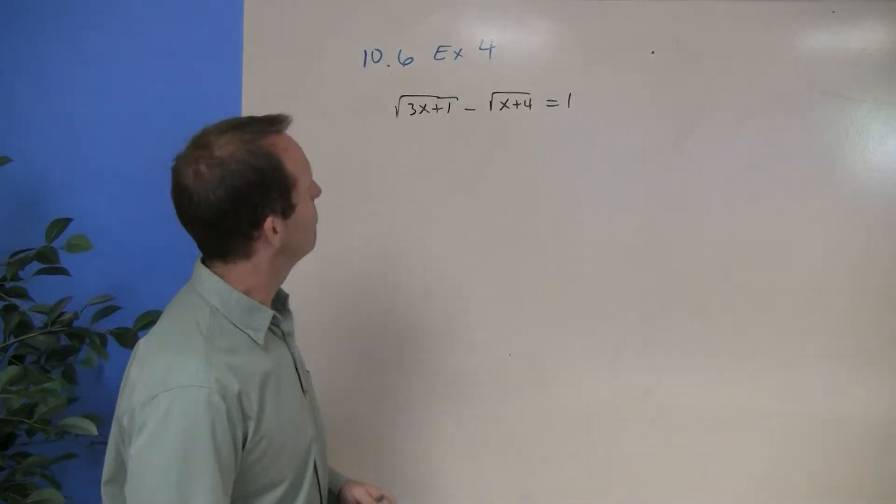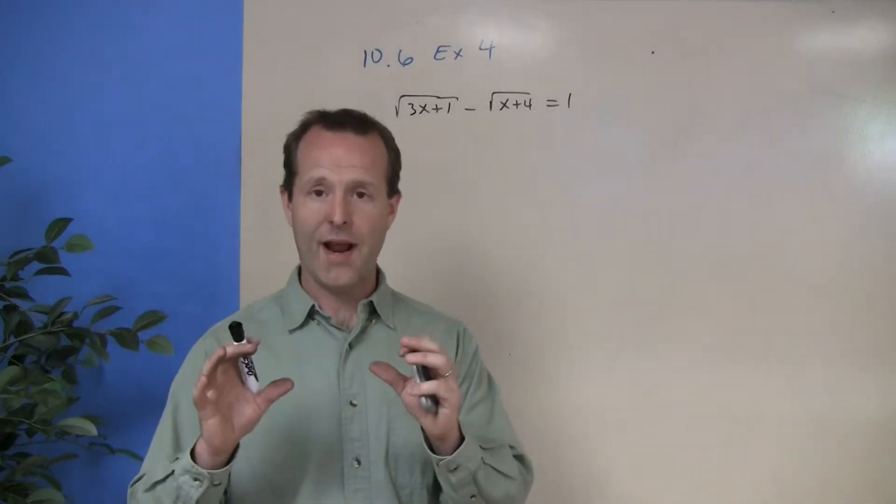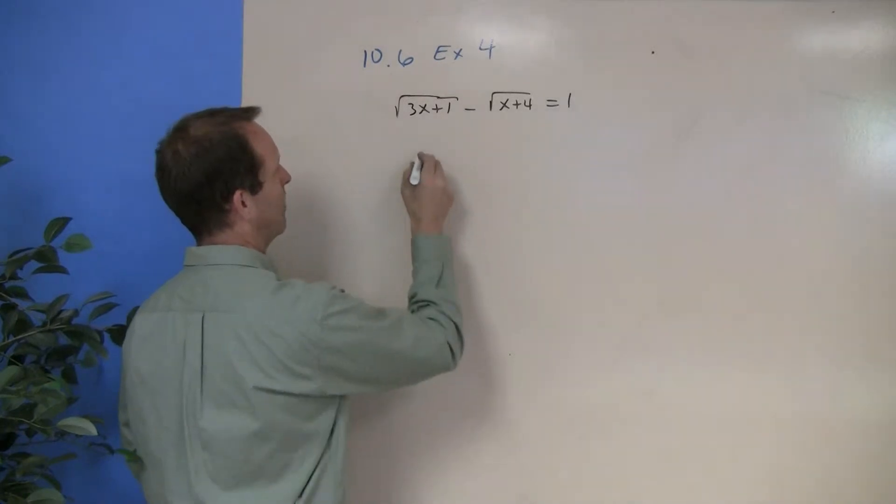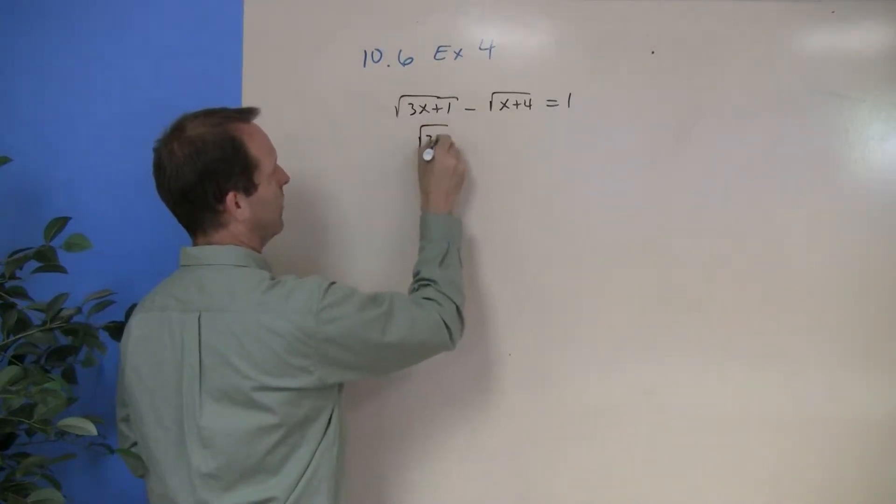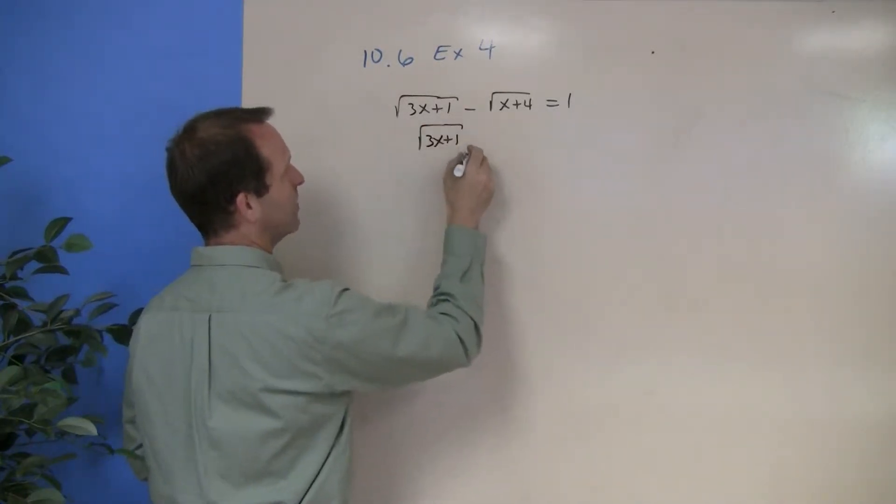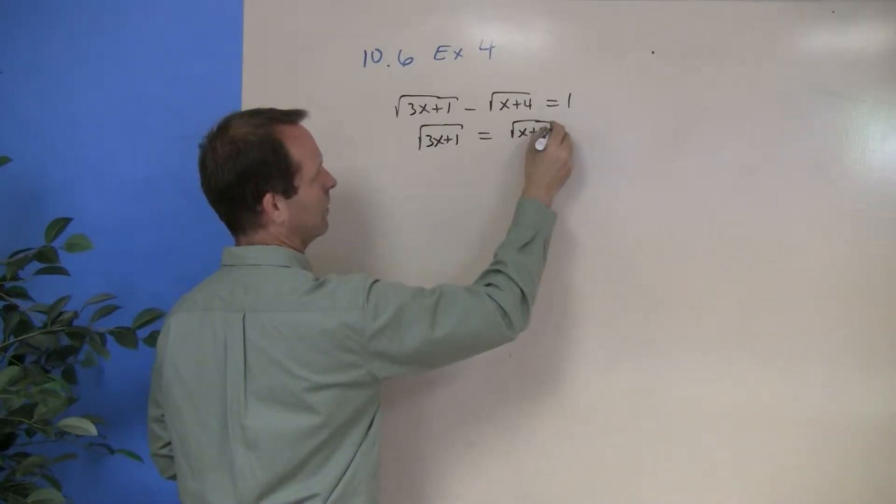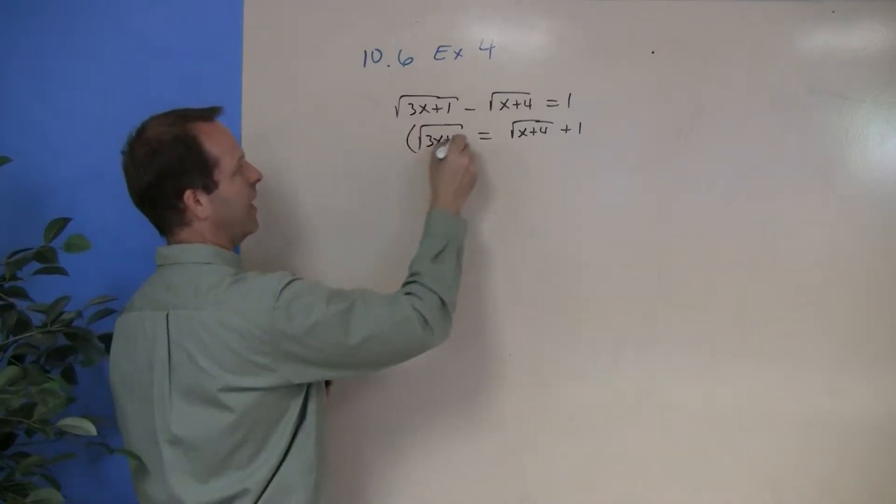In this case, though, we're going to have to work with one radical at a time. So I'm going to add this radical to both sides. So I'm left with root 3x plus 1 equals x plus 4 plus 1. Let's square both sides.